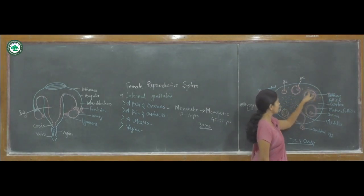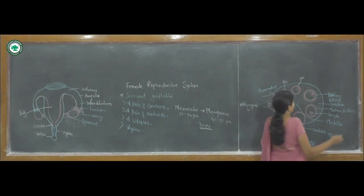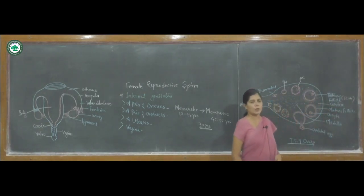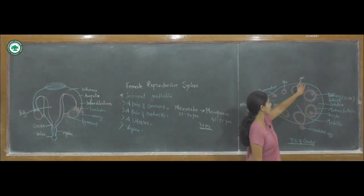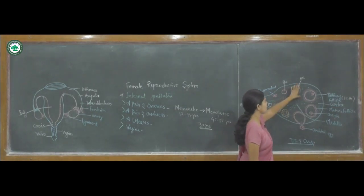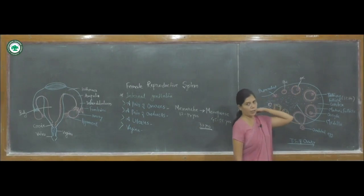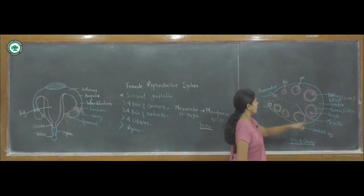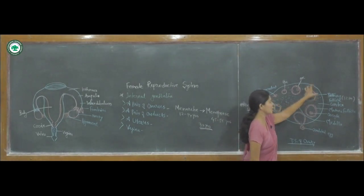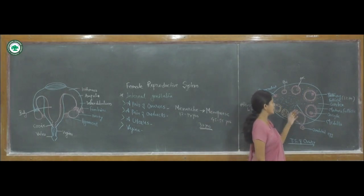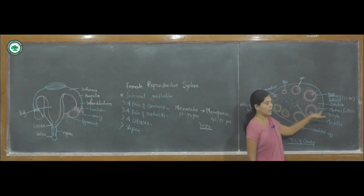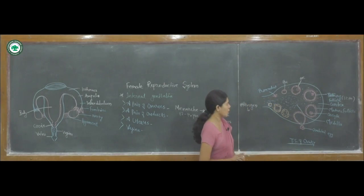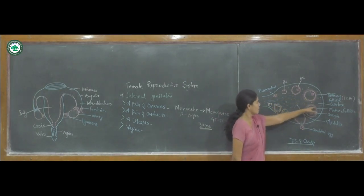This estrogen hormone is secreted by the secondary follicle, and the secondary follicle is developed into the tertiary follicle by the twelfth day of the menstrual cycle. After formation of the tertiary follicle, it is developed into the mature follicle, also known as the Graafian follicle.